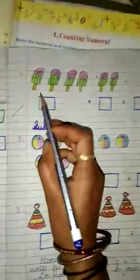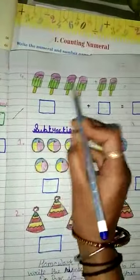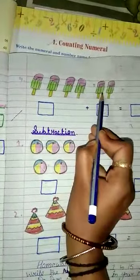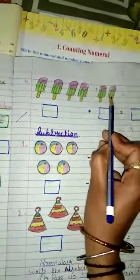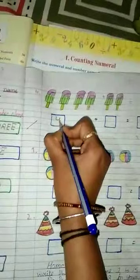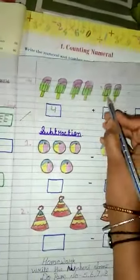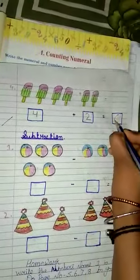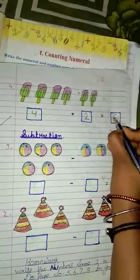Come to the next question. How many ice creams are there? First, we count. 1, 2, 3, 4, 5, 6. So here 1, 2, 3, 4. We write 4. And 1, 2. We write 2. Then 4 plus 2 equal to what? 4 plus 2 equal to 6.